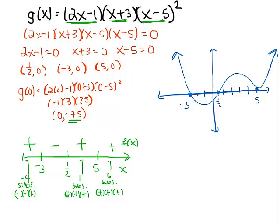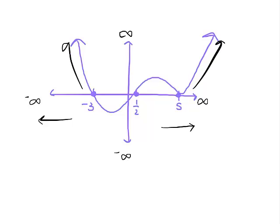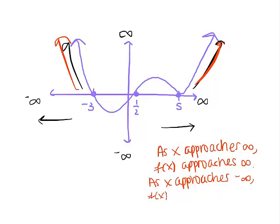Now we have to ask ourselves the end behavior. As x goes very big or very small, where does y go? As x approaches infinity, f of x approaches infinity as well. And as x approaches negative infinity, f of x also approaches infinity. So as x gets big, y gets big, and as x gets small, y also gets big.